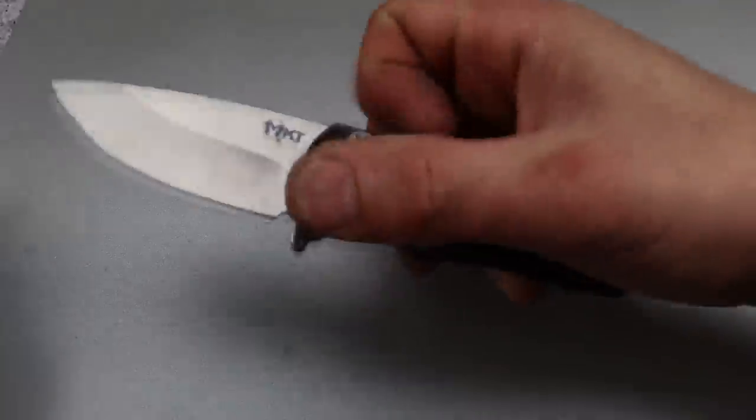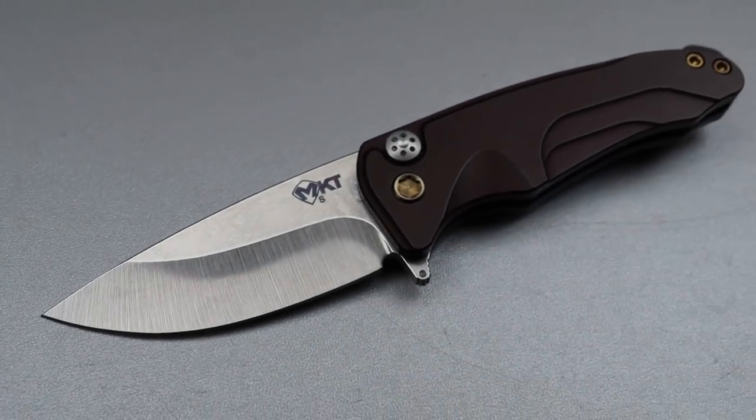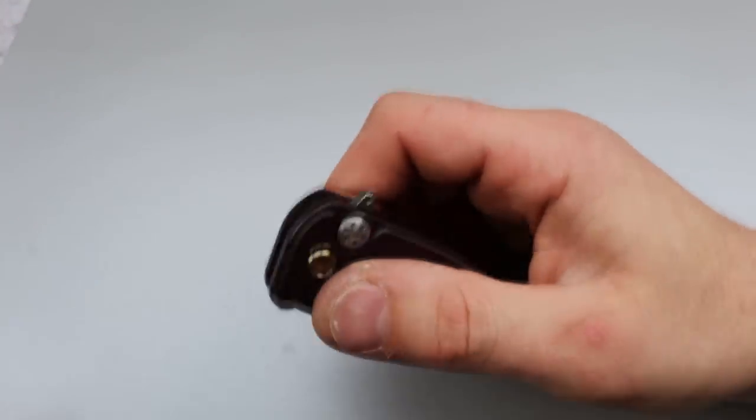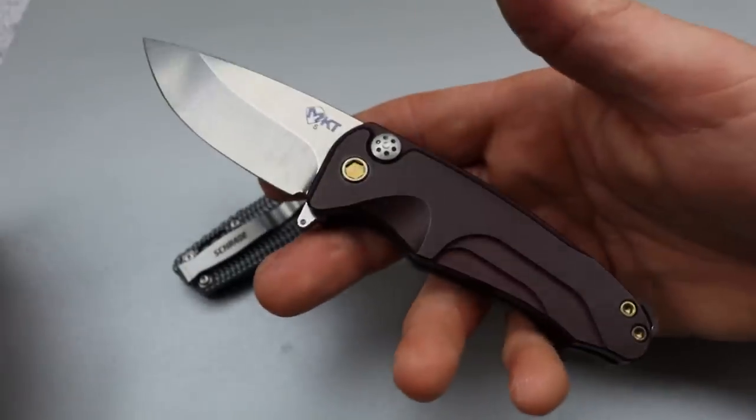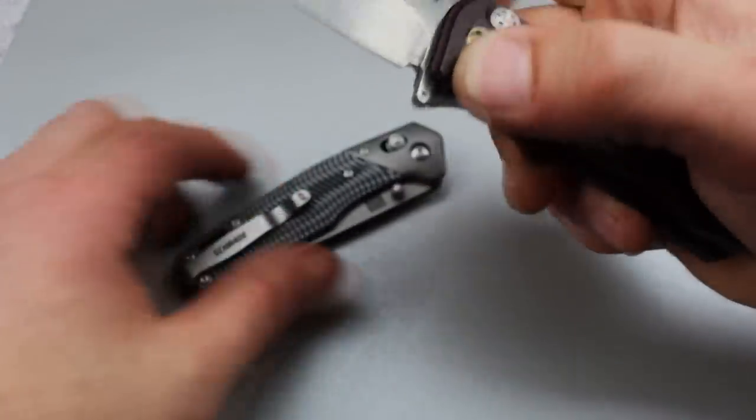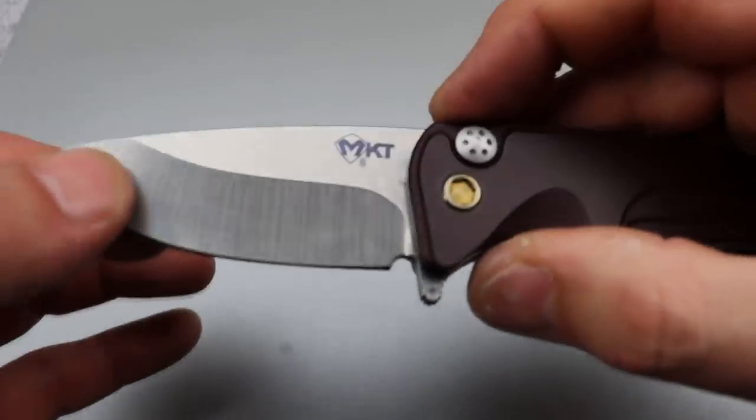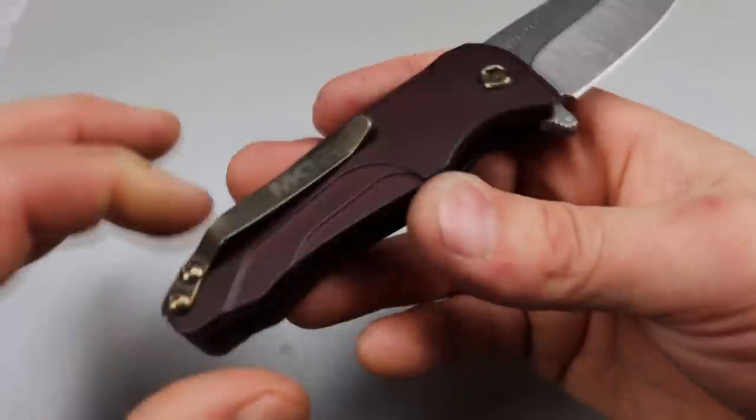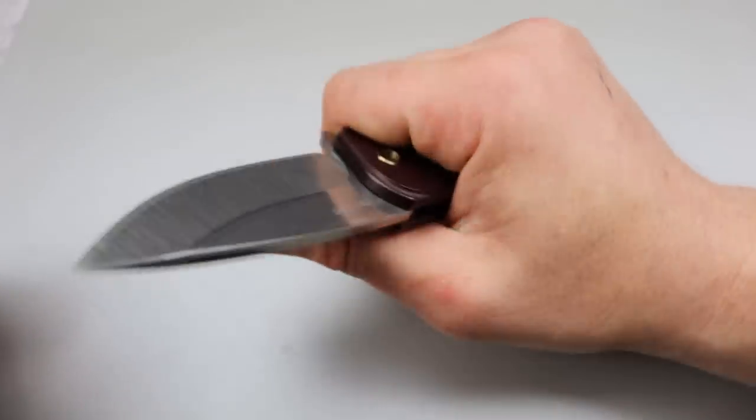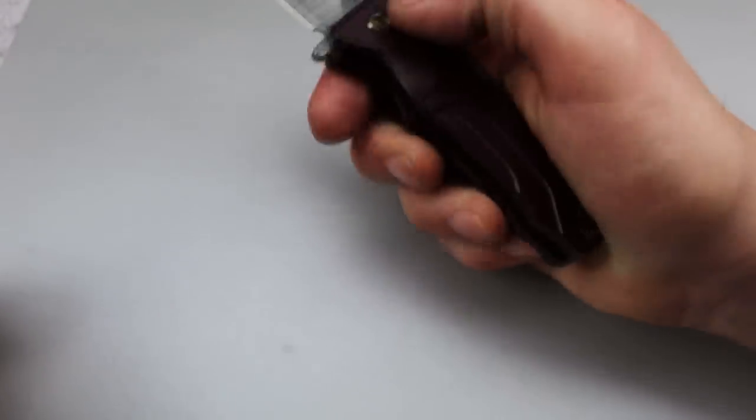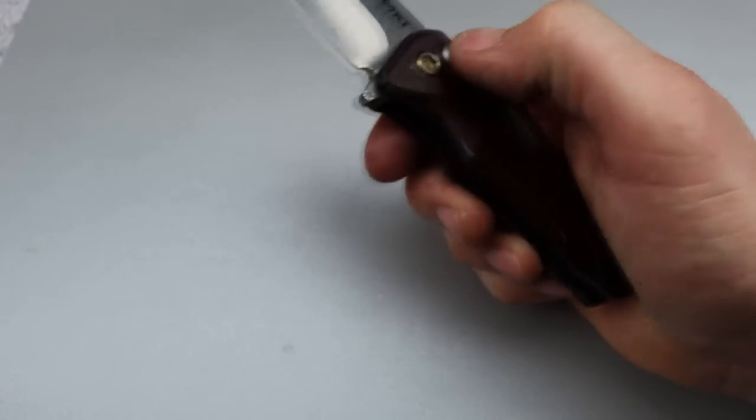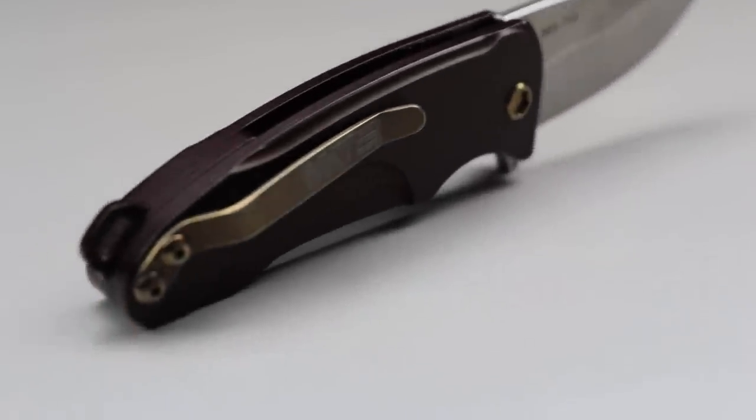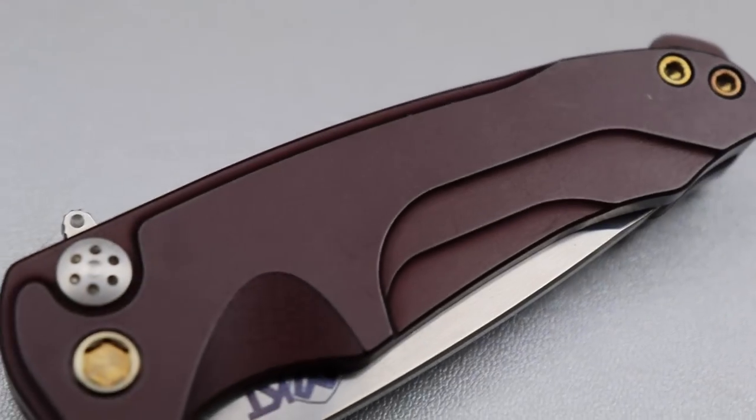Next is, we're stepping it up a little bit with this one. We got the Medford Smooth Criminal. S35VN. Aluminum scales. People are going to say, how are you bitching about the price when these things are like $350, $400 bucks? Yeah, but they're more mid-tech. The hollow grind is done by hand, and it's very consistent. It has a lot better geometry.